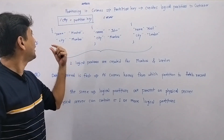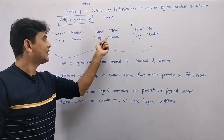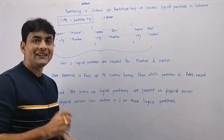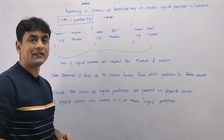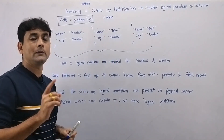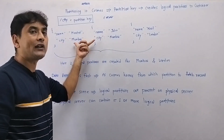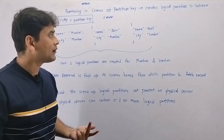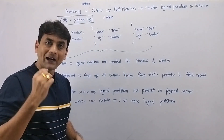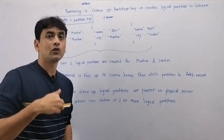Imagine we have three records in this container: name Harshal with city Mumbai, name John with city Mumbai, and name Naman with city London. Because we have 'city' as the partition key, two logical partitions will be created. The first partition is for city Mumbai, containing the first two records, and the second logical partition contains the record with city London.